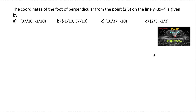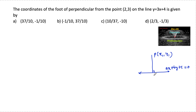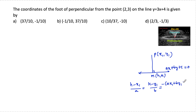Since we know that the foot of perpendicular from a point P(x1, y1) to the line ax + by + c = 0, let us consider the foot M(h, k), and it is given by: (h - x1)/a = (k - y1)/b = -(ax1 + by1 + c) / (a² + b²).